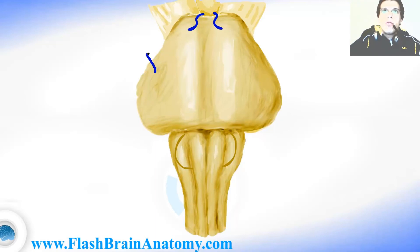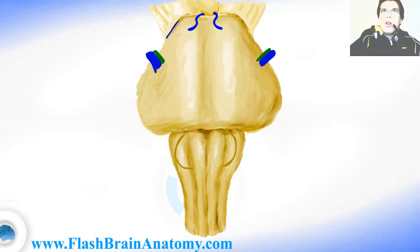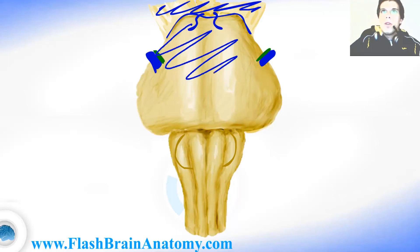Here we can find the trigeminal nerve, and the same on the other side. We can also find the motor root of the trigeminal nerve, and the same on the other side. This is the border between the pons and the medulla. This over here was the border between the mesencephalon — the midbrain up there — and the pons over here.